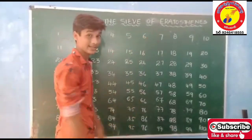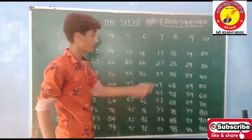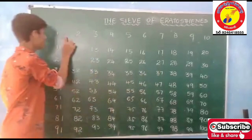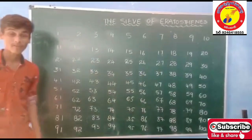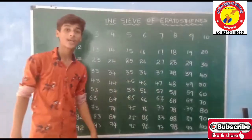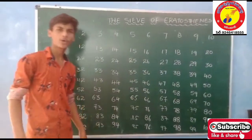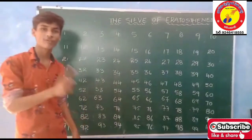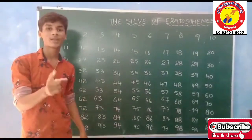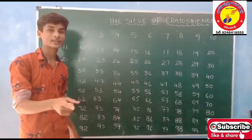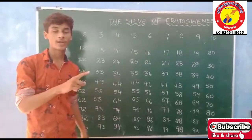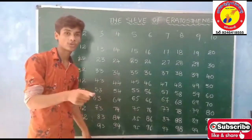This is the Sieve of Eratosthenes. So, 1 is not a prime number or a composite number, because it is having only 1 as its prime factor. So it is neither a prime nor a composite number.